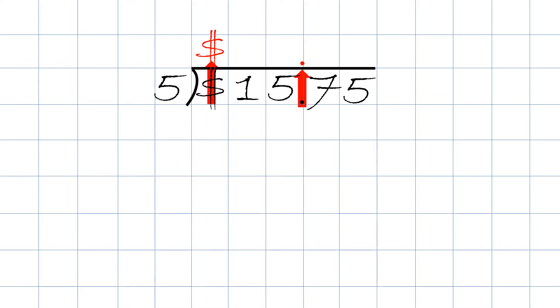And so the first thing we do is we take 15 divided by five, which will be three. Or we could ask ourselves how many times does five go into 15, and three times. Next, what we do is we take three times five and the answer will be 15. We then take 15 minus 15. The answer will be zero.